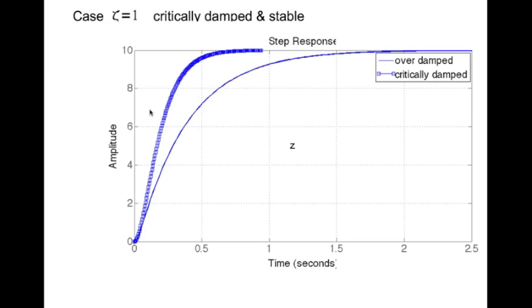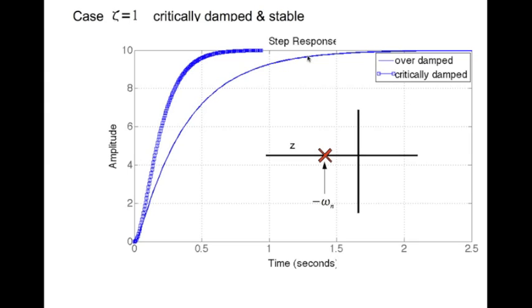Drawing the step response, and comparing with the over-damped case, the critically damped case is much faster than the over-damped case. Typically the goal of controller design is to get a critically damped system because it responds the fastest and has no overshoot. Both poles of the transfer function — the roots of the characteristic equation — are at the same location: minus ω_n.